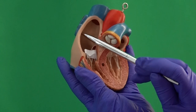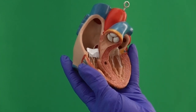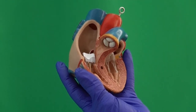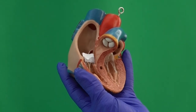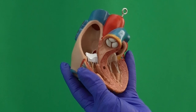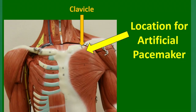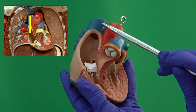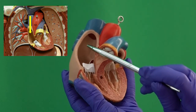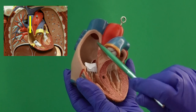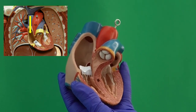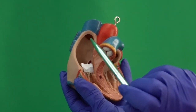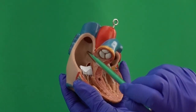Pay attention to the location of the SA node, because in individuals with irregular heartbeat — too slow or too fast — some patients need an artificial pacemaker. The device is placed under the skin below the clavicle, with one or two wires that pass through the superior vena cava to reach near the sinoatrial node and, in some cases, other parts of the conducting system. That explains why we use the superior vena cava to access the SA node.